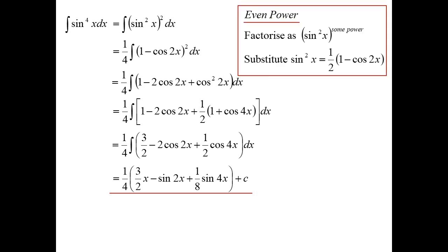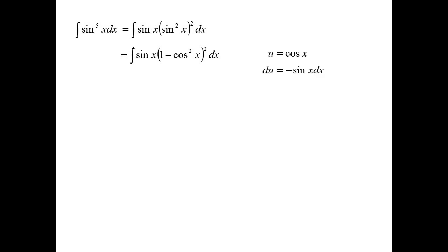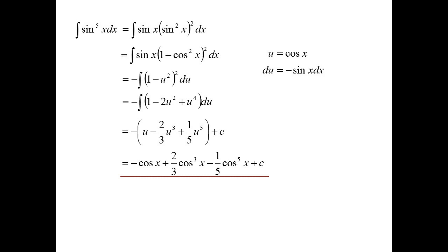So any time you have an even power, we don't pull the sine x out. We leave it as sine squared to some power, change the sine squared using the double angle result, then expand and deal with each term as needed — because you're reducing that power, changing the squared to the power of 1 of a trig function. For sine to the 5th — odd power — pull the sine out, leaving sine squared squared, change sine squared to 1 minus cos squared, then do the substitution and we get an answer.